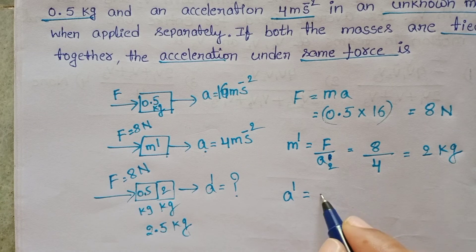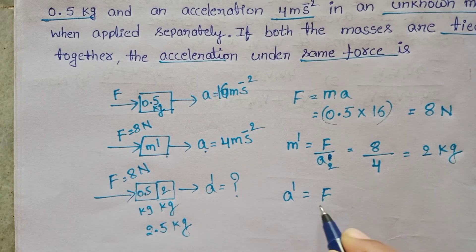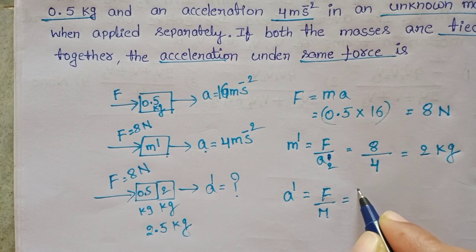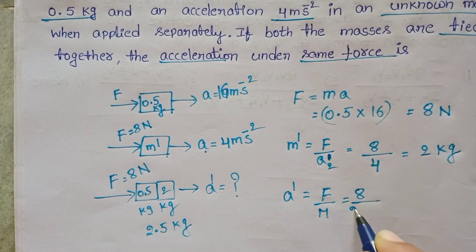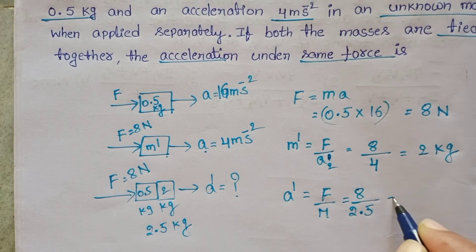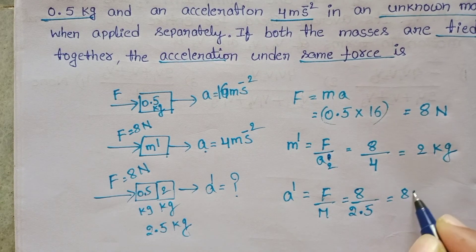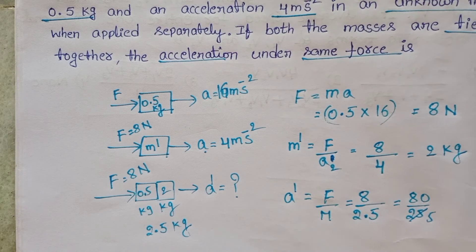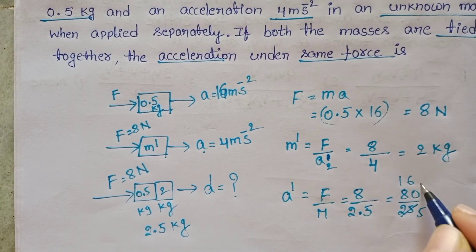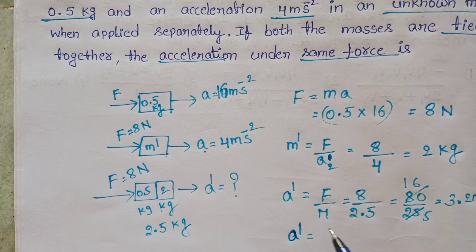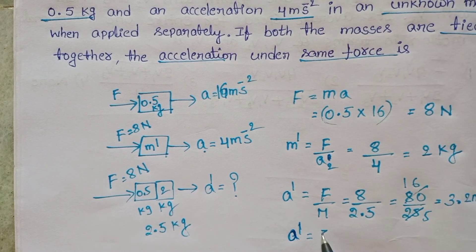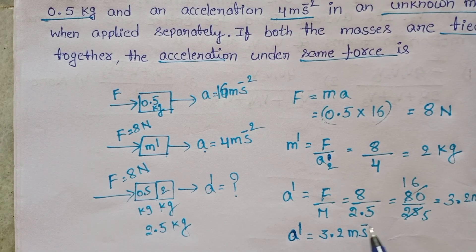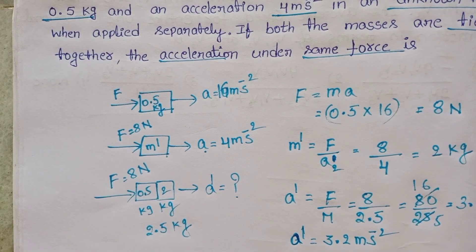A = F/M. Force is 8 newton and mass is 2.5 kg. Simplifying this, when the two bodies are tied together the acceleration is 3.2 m/s².